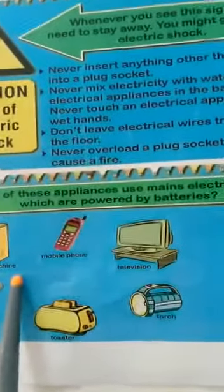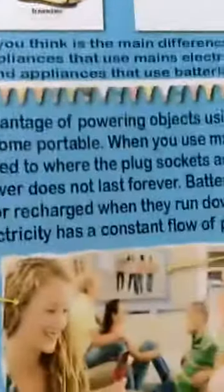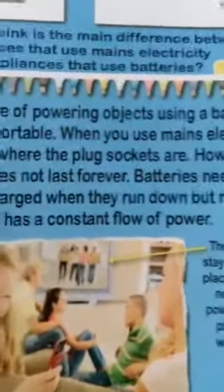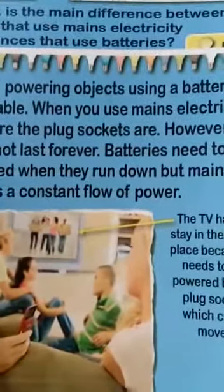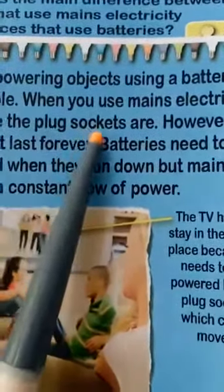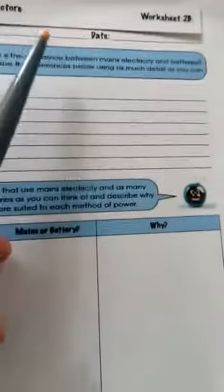There's a list of things here — which appliances use mains electricity and which are powered by batteries, so you can put them into two groups. We're looking at the advantages of powering objects with a battery to make them portable, so they can move around, whereas with mains electricity you have to stay near a plug socket. There are worksheets 2a or 2b to complete.